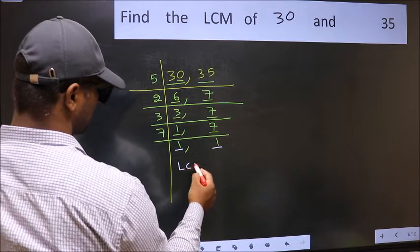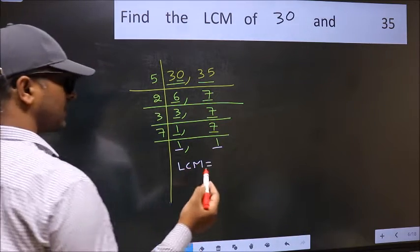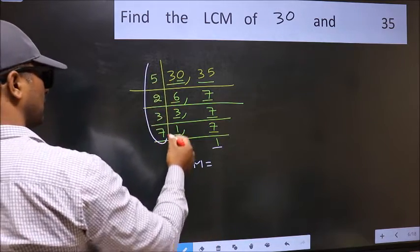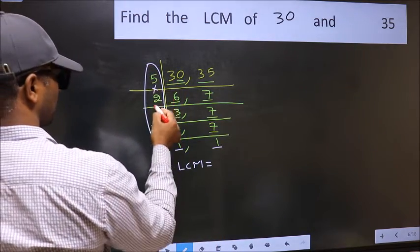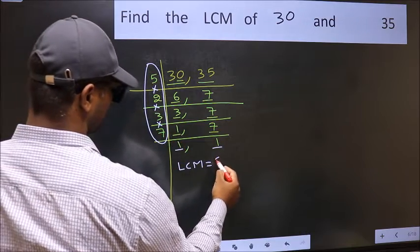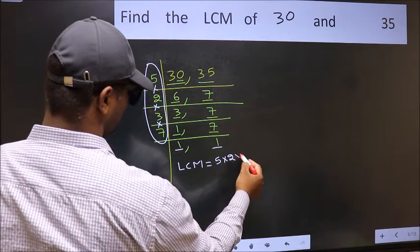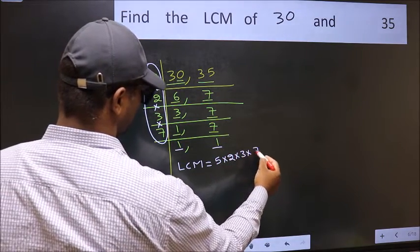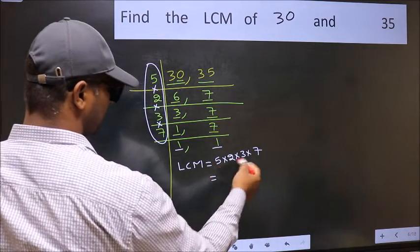So our LCM is the product of these numbers. That is 5 into 2, into 3, into 7. When we multiply these numbers,